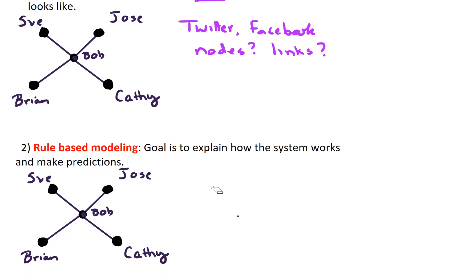So the second type of modeling we'll talk about is rule-based modeling. The goal is to explain how the system works and to make predictions. So let's look at our social network with Bob in the middle. Bob has four friends, Sue, Jose, Kathy, and Brian. And suppose we want to come up with a rule to describe how the network grows.